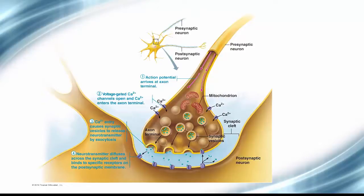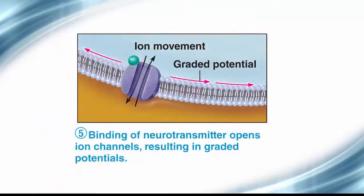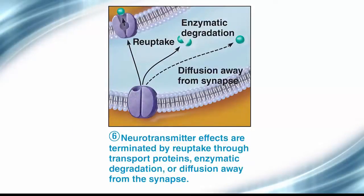We begin the process with an action potential traveling down the axon of the presynaptic neuron. The action potential arrives at the axon terminal, causing voltage-gated calcium channels to open, and calcium enters the axon terminal. Calcium entry causes synaptic vesicles to release neurotransmitters by exocytosis. The neurotransmitter diffuses across the synaptic cleft and binds to specific receptors on the postsynaptic membrane, opening chemically-gated ion channels and resulting in a change in membrane potential. The final step is the reuptake of the neurotransmitter to be degraded or diffused away, ending the signal.